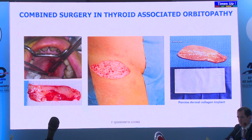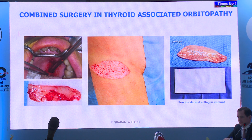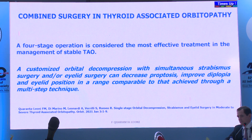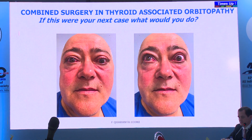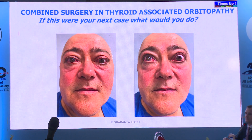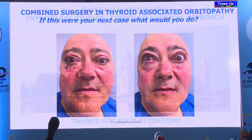For lower eyelid retraction, preference is dermal graft or acellular dermal collagen implant rather than hard palate, which is too bulky. Alloderm is not available in Europe. The four-stage operation remains the best option in most cases, but think again for patients who would benefit from combined surgery—especially when patients are traveling from far away.